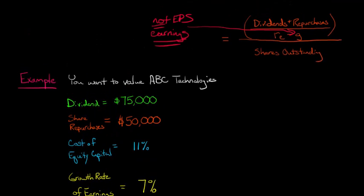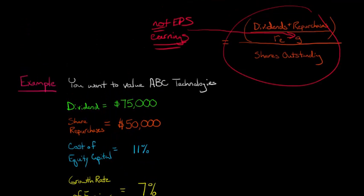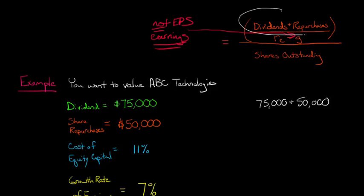So now, to calculate this, we're just going to apply this model right here. So let me change colors here. So we have $75,000 in dividends, and then we're going to add in the $50,000 in repurchases. Now look, I just took the numerator right here, and then I just used these numbers. That's all we're doing, just plugging in. Now we're going to take this and divide it by the cost of equity capital minus the growth rate of earnings.